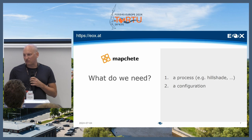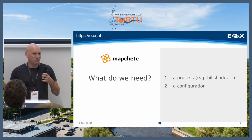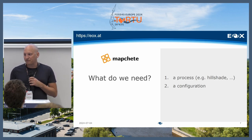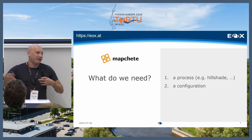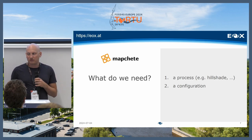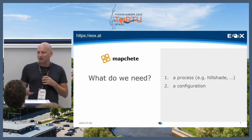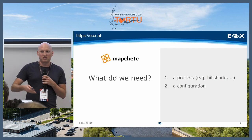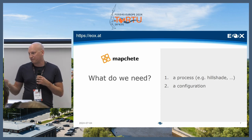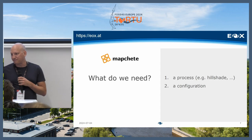What do we need for this? First and foremost, we need a process. For example, a hillshade would be a process. And we need a configuration for it — that basically points to the process, to the inputs, and to the output format. Very simple.